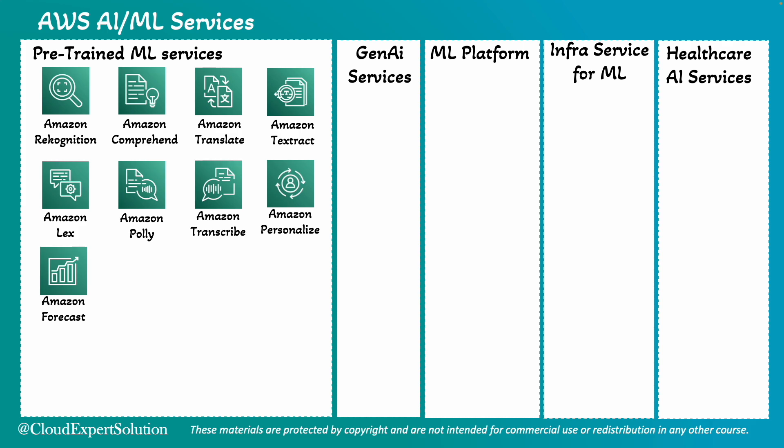Or even a stock broker can use Amazon Forecast to predict stock prices from price history. Amazon Kendra can be used for intelligent enterprise search. An example use case could be enterprises using Amazon Kendra to improve internal search capabilities, allowing employees to quickly find relevant documents and information.